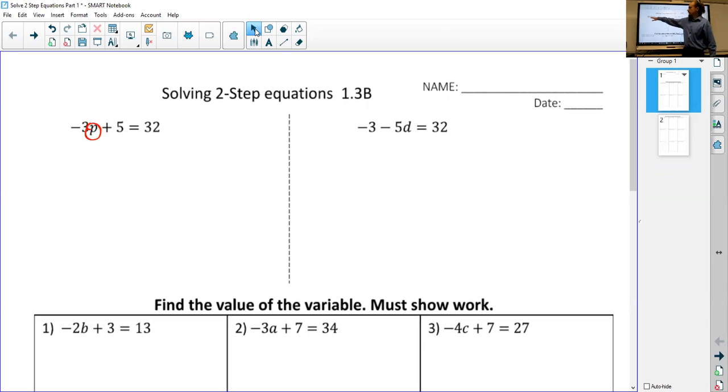But this time you notice we have plus five, and we also have times three. So we want to get rid of both of those. Technically, the order that you do that doesn't matter. But the simplest way will always be to get rid of the plus or minus first.